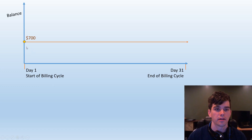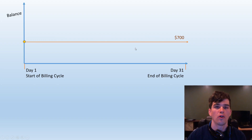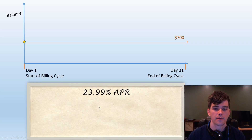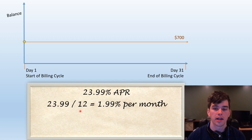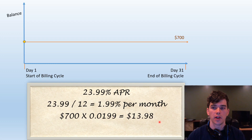Here's a depiction of a credit card billing cycle. Let's suppose you start the billing cycle with $700 on your credit card. I'm going to go through a simplified calculation of how your interest is calculated. Suppose you keep a $700 balance on your credit card the whole month and never use it. Pull out your rates and fees table and find your APR. In this case, the card was 23.99% — but that is your annual percentage rate. To calculate the interest for one month, you can approximate it by dividing your APR by 12, giving about 1.99% per month. So $700 multiplied by 1.99% gives $13.98 of interest. This is a rough estimate.